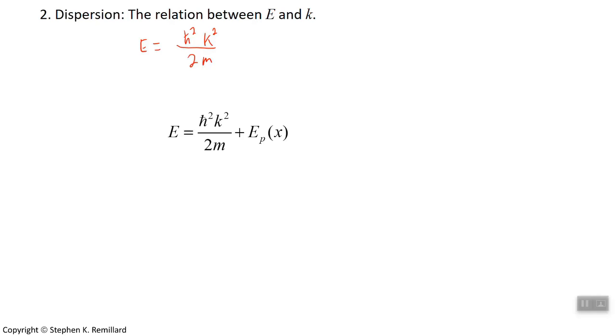In the event that the electron is in one of these periodic potentials, you have a different dispersion relation. Now you have ℏ²K² over 2m, which is what it had when the electron was free, and you have to add to it that potential energy that it is in. For the quasi-free electron model, the potential energy background is a perturbation on the total energy.